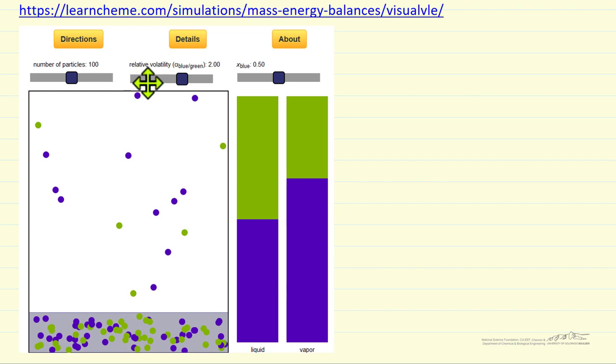In this case, the relative volatility of blue over green is 2. We have 100 particles in this simulation, and the liquid phase is a 50-50 mixture. This shows the relative amount of blue to green in the liquid phase is 1 to 1, and the vapor phase is enriched in the blue particles.